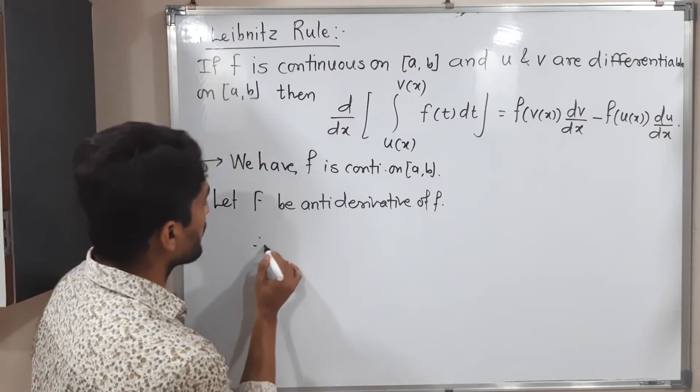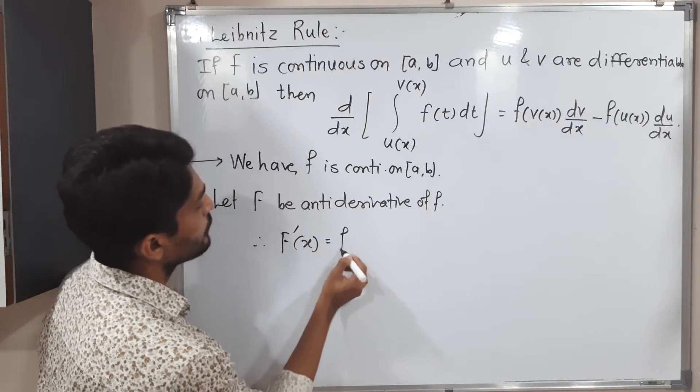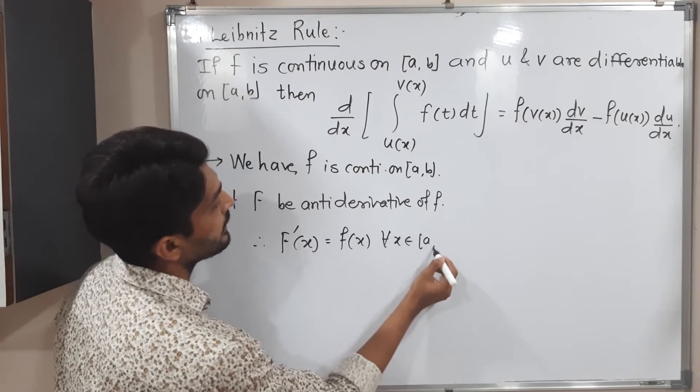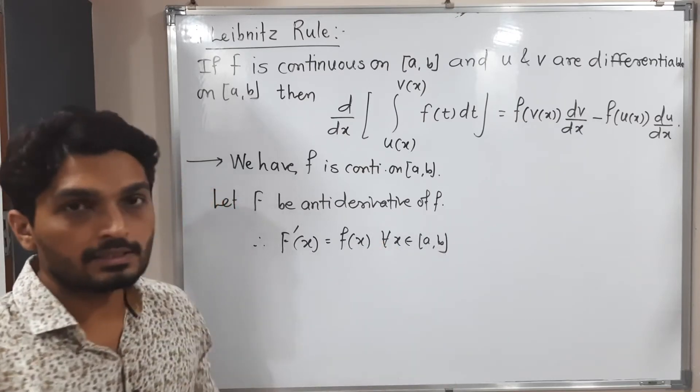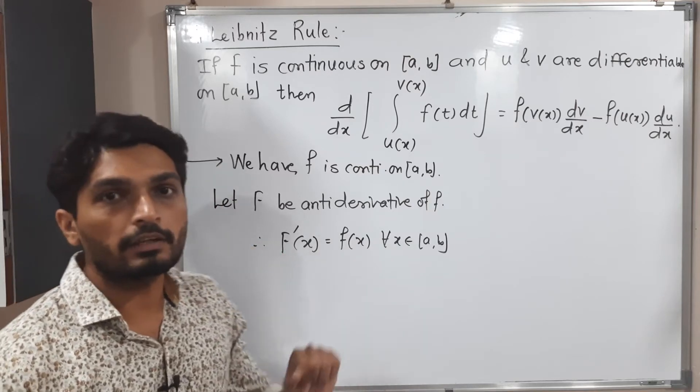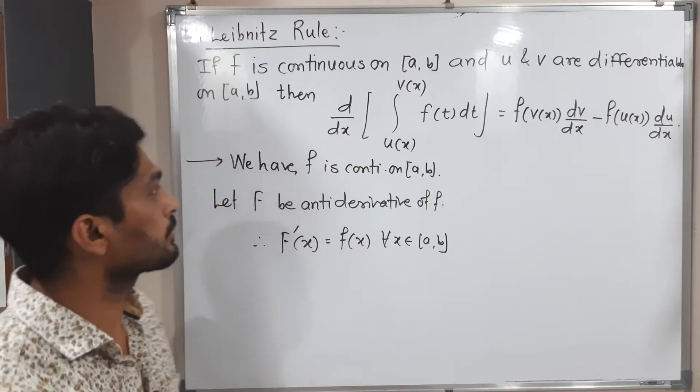So therefore, what we get integration of F dash of x is equal to small f of x for all x belongs to closed interval [a,b], since it is anti-derivative. So that's why F dash is a derivative of capital F and capital F is anti-derivative of small f. So this is the relation between them.